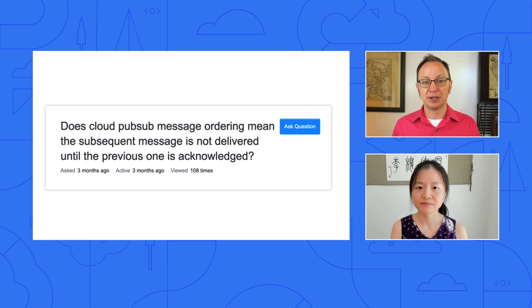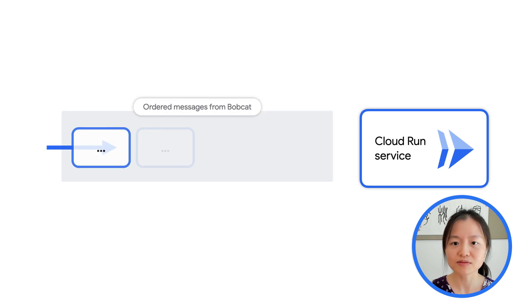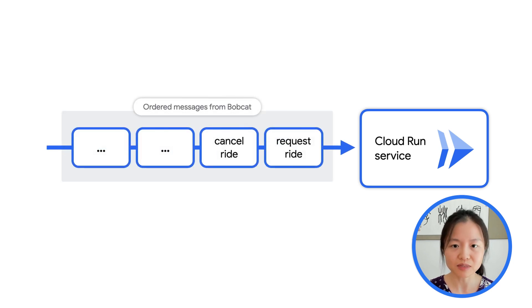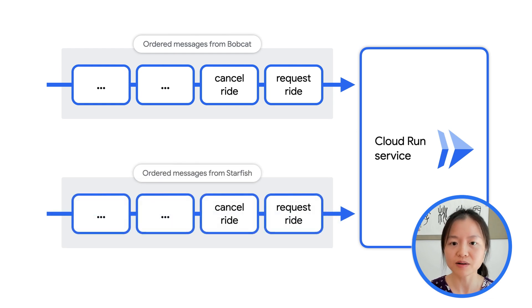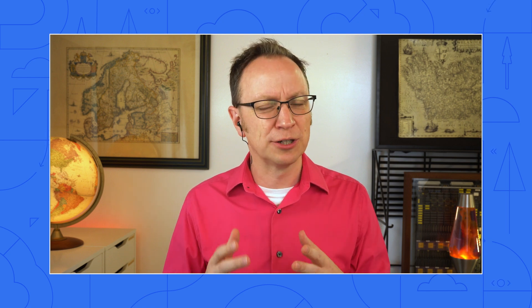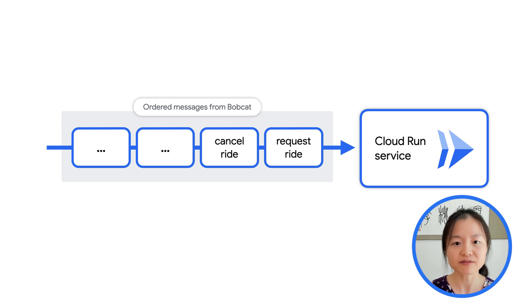Very nice. We can refer back to your code and your configuration as we answer the questions. So the first question is from Jacob on Stack Overflow, specifically about the push subscription case. Jacob writes: does Cloud PubSub message ordering mean the subsequent message is not delivered until the previous one is acknowledged? That is correct. To use an example from the ride-hailing app, if the request-ride message by Bobcat is published before the cancel-ride message by Bobcat, the request-ride message must be acknowledged by your application before PubSub even delivers the cancel-ride message. That is likely for Bobcat, but it won't affect other rider IDs.